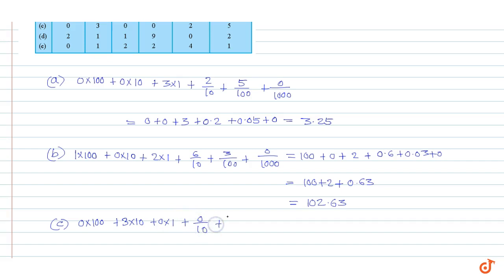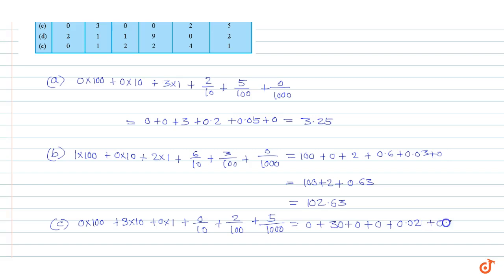Part C has 0 tens, 2 hundredths, plus 5 thousandths. This is equal to 0 + 30 + 0 + 0 + 0.02 + 0.005, which equals 30 + 0.025, giving us 30.025.